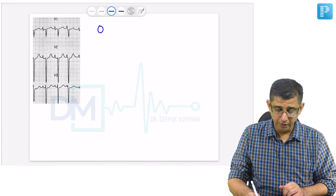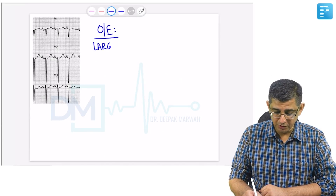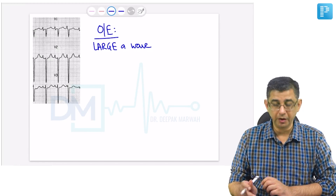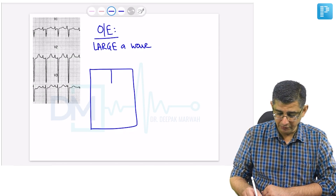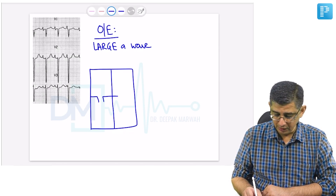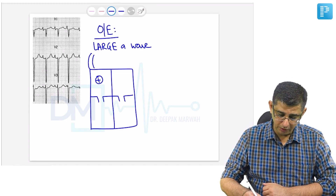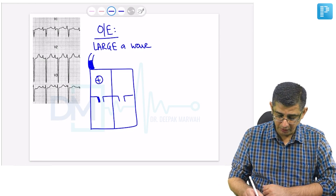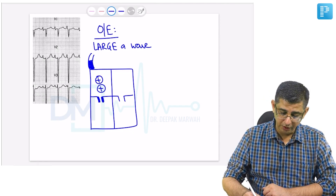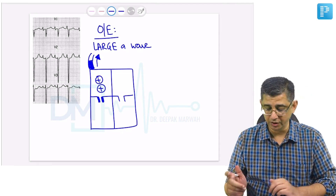Looking at the examination findings of these patients from the perspective of hepatomegaly: these patients would have a presentation of a large A wave and a blunted Y descent. The reason for a large A wave is that due to tricuspid stenosis the right atria has to generate more force to push blood forward. During atrial systole, the higher pressure in the right atria would translate into the jugular venous column going much higher than normal, which is why these patients present with large A waves.